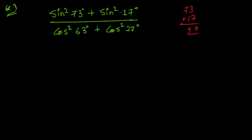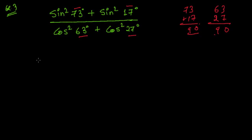Since they are complementary, we have to use the complementary angle formula. Now let me also add 63 and 27 — that's 0 in the units, 6 plus 2 is 8, plus 1 is 9, so again 90. So 63 and 27 are also complementary angles. We must use complementary relationships here.